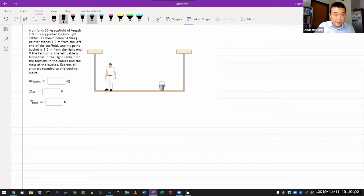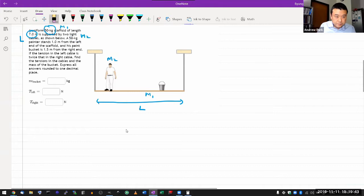So here, let me just highlight some of the information that I'll probably end up needing. So this whole scaffold, it has a mass of 50 kilograms. Let me call that M1. And given the length, call that L, by two light cables. So light is code word for massless. 58 kilogram painter. So let me call that M2. Stands one meter.